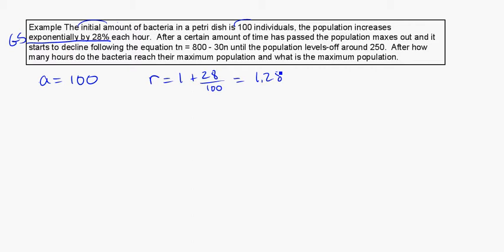So, in this case, I'm going to write out my equation for the first part, which is going to be Tn is equal to 100 times 1.28 to the n minus 1, coming from our equation for geometric sequences. And then I've been given another equation, Tn is equal to 800 minus 30n. And it's in a format that's slightly different than what we've seen, and in fact, this is an arithmetic one. It is a linear sequence as well.